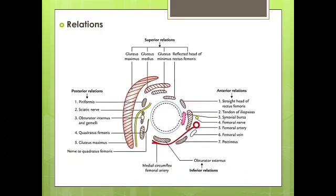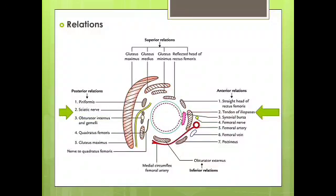Now we are moving on to the relations of hip joint. Anteriorly, there is the straight head of rectus femoris, tendon of iliopsoas, synovial bursa, femoral nerve, femoral artery, femoral vein, and pectineus muscle. Posteriorly, there is piriformis, sciatic nerve, obturator internus and associated gemelli, quadratus femoris, and gluteus maximus. A key point: the femoral nerve is related anteriorly and the sciatic nerve is related posteriorly to the hip joint.